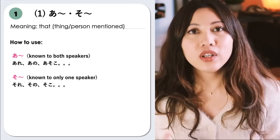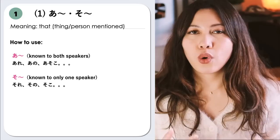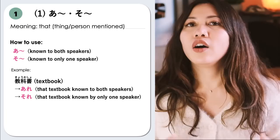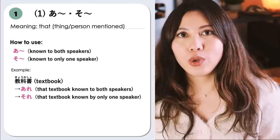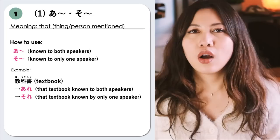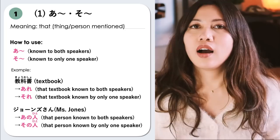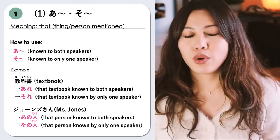On the other hand, we use the prefix So if only one of the speakers knows about the noun — so we use sore, sono, soko, and so on. For example, the noun 'textbook' or kyokasho. If we want to mention it again, we use a demonstrative pronoun. We say are — that textbook — if it's both known to the speakers. Or sore — that textbook — which is only known by one of the speakers.